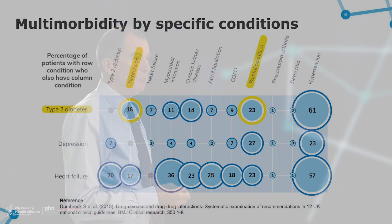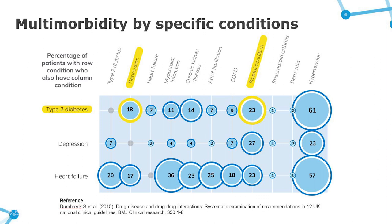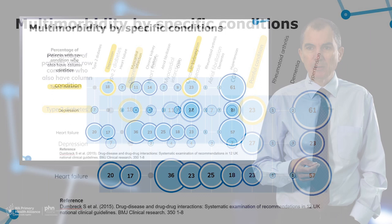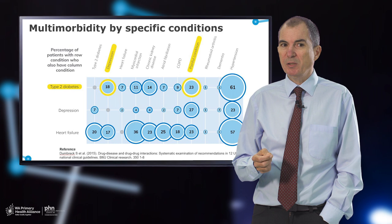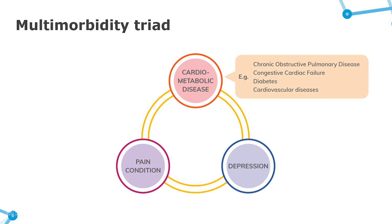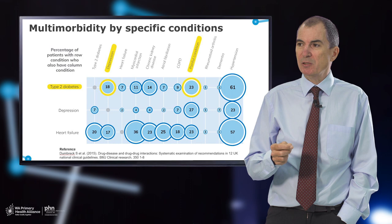In general practice, it's common to see patients with multi-morbidity — over 30 to 40% of presentations involve two or more chronic conditions. For example, 20% of individuals with diabetes will have a depressive disorder when seen in primary care. Of that pairing, 25% will also have a painful condition, creating a triad that creates complications and difficulties for general practitioners to manage.